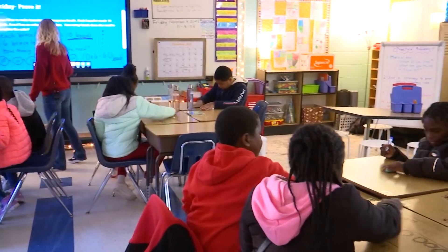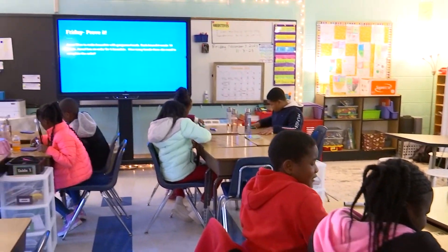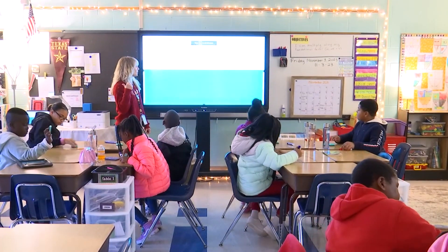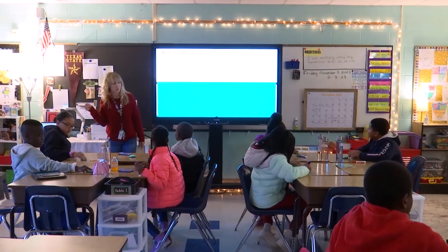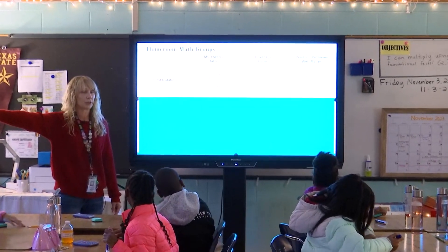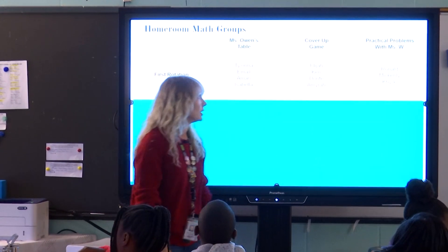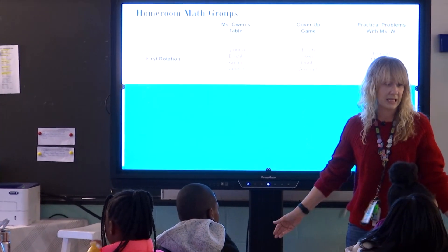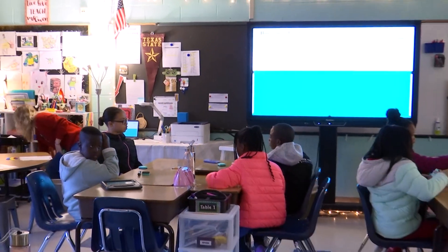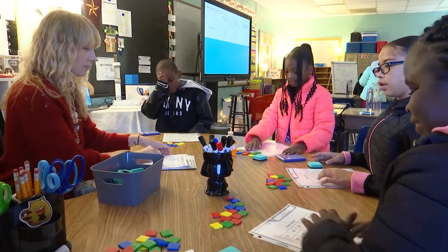We are going to move into our stations. First rotation: at my table, Tyana, Amari, and Isabella — you are coming to play Trios. At the cover-up game on the rug — there are instructions up on the windows if you can't remember how to play. Elijah, Carrie, Dante, and Amira, you guys will go there. And practical problems with Ms. W at the back table — Ronald, McKinley, and Kylie. You don't need to bring anything with you. Everything is at the station when you get there.